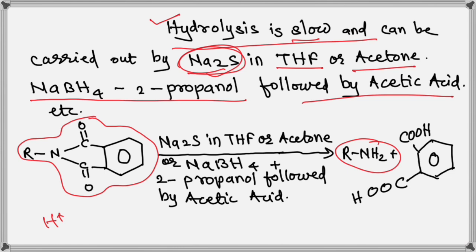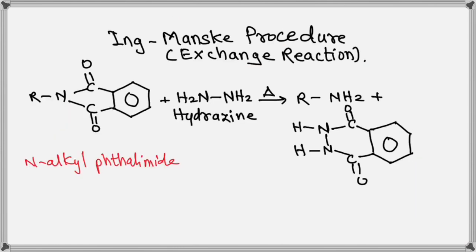And again, one method which is mostly used, that is called the Ing-Manske procedure. This is an exchange reaction. So this N-alkyl phthalimide when treated with hydrazine, when heated with hydrazine, it produces alkyl amine, alkyl primary amine.